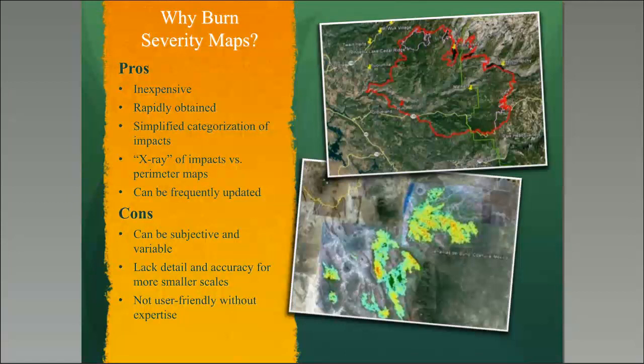They're also a simplified categorization of impacts. When you have a continuum, categories help people understand things better. They give you an X-ray of impacts versus perimeter maps, which just say an area has been burned or hasn't. One rancher told me that when we showed up with some of these initial images, he said, 'I feel like somebody told me I had cancer, but until you showed me this map I didn't understand exactly how it had impacted the landscape. At least now I feel like I can have a plan of attack.' So I think they're also a very important social tool for reaching out to the public after such large devastating fires.